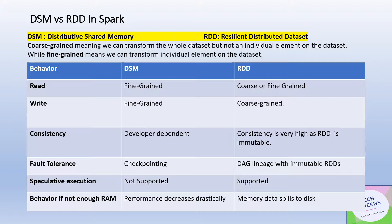At a high level, coarse-grained means it works at one level higher than fine-grained. It means we can transform the whole dataset but not an individual element. Coarse-grained means you can have some kind of transformations or compute on the whole dataset, but you cannot apply transformations at the individual element level. Fine-grained, on the other hand, does give you the handle to work on individual elements — it operates at a much lower level than coarse-grained.